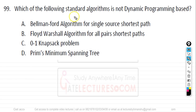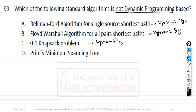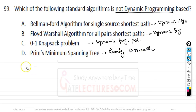Question number 99. Which of the following is NOT a dynamic programming based algorithm? Bellman-Ford (single shortest path) is dynamic programming. Floyd-Warshall (all-pair shortest path) is dynamic programming. 0/1 Knapsack is dynamic programming, while Fractional Knapsack is greedy. Prim's algorithm for spanning tree is a greedy approach, not dynamic programming. So D (Prim's algorithm) is the right answer.